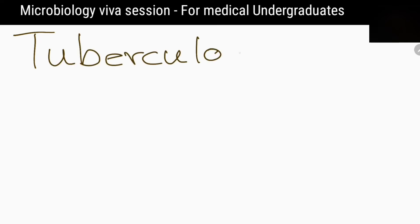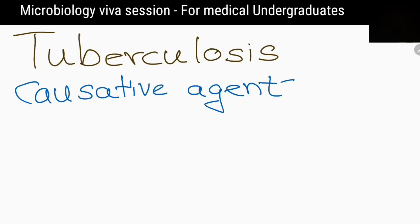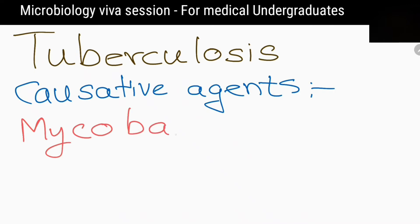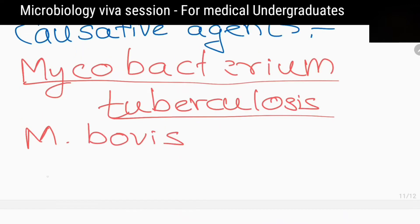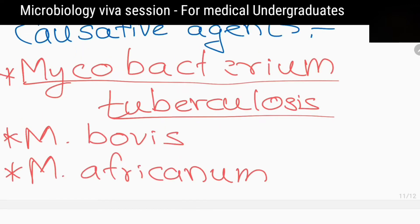What are the possible causative agents for tuberculosis? Mycobacterium tuberculosis, Mycobacterium bovis, and Mycobacterium africanum.